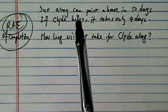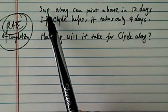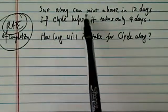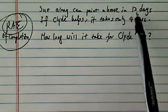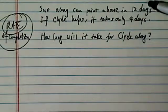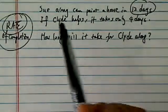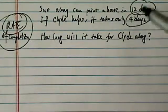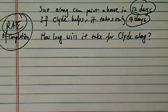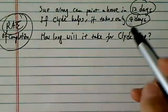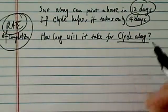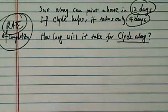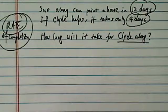So the problem states: Sue alone can paint a house in 12 days. And if she works with Clyde, the two of them take four days. And the question asks, how long will Clyde take if he does it by himself?